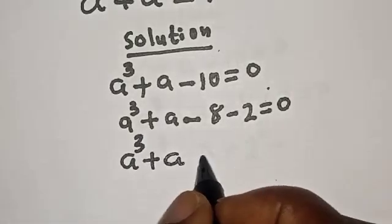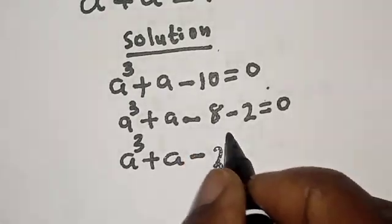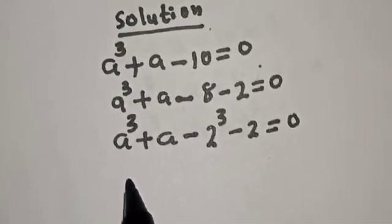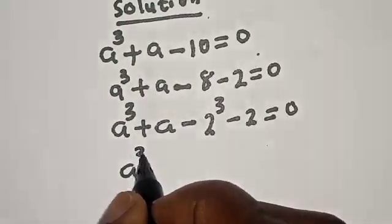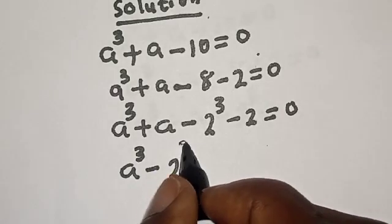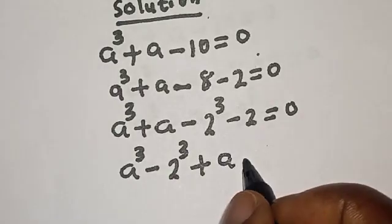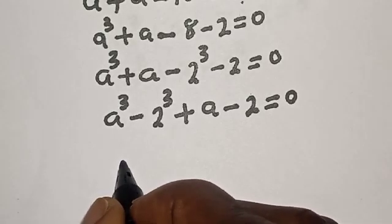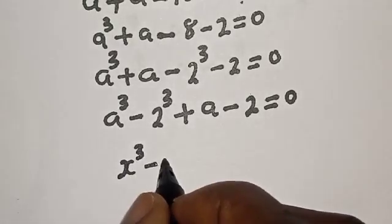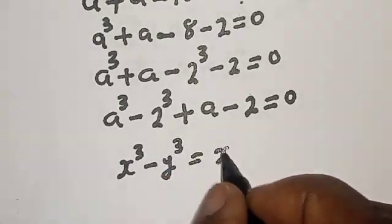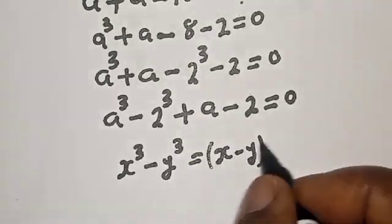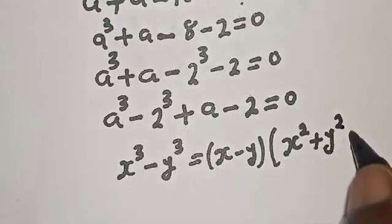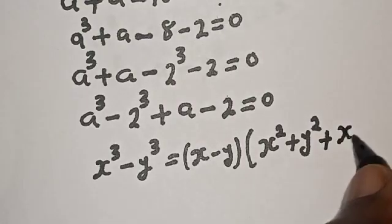So a raised to power 3 plus a minus 8 can be written as 2 raised to power 3, minus 2 equals zero. Now let's compare: we have a raised to power 3 minus 2 raised to power 3, plus a minus 2 equals zero. Take note of the rule: x raised to power 3 minus y raised to power 3 equals (x minus y)(x squared plus y squared plus xy).